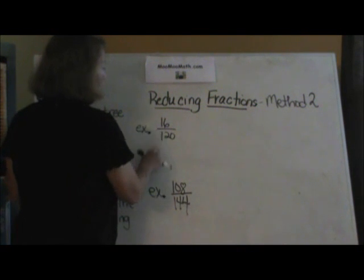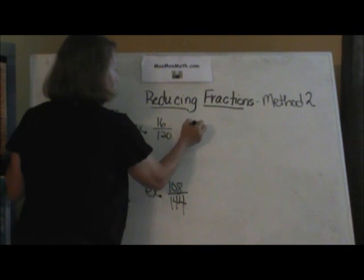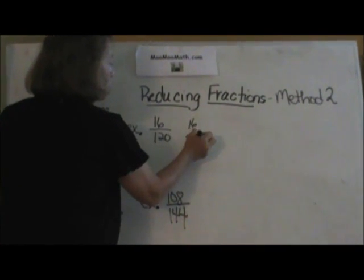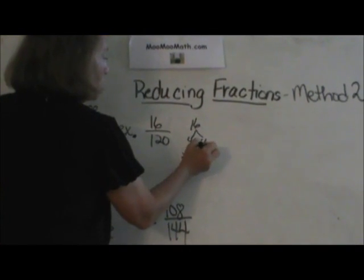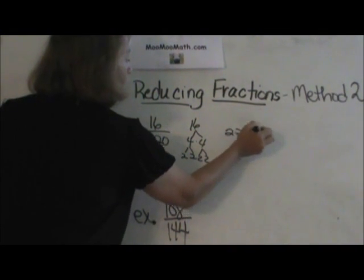Let's start with a quick example: 16 over 120. I'm going to do a factor tree for 16. Four times four, which is two times two times two times two. I have a two, two, and a two on the top.